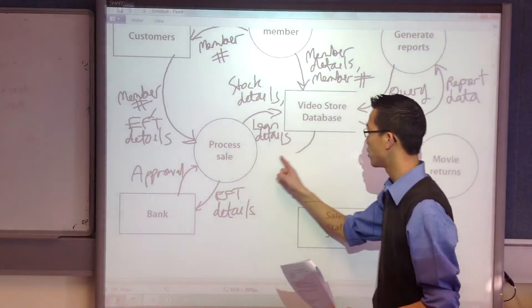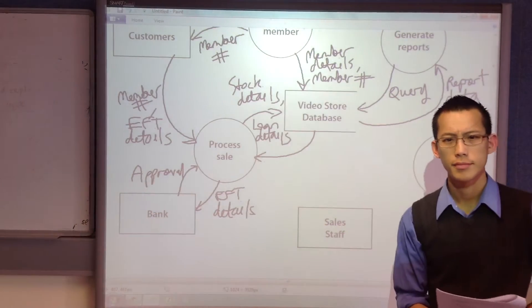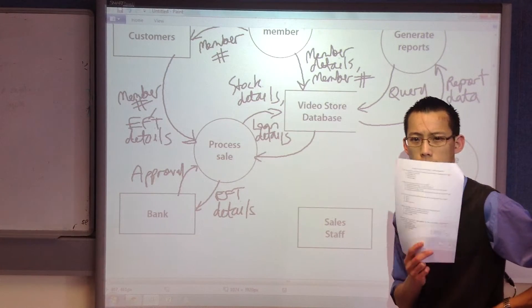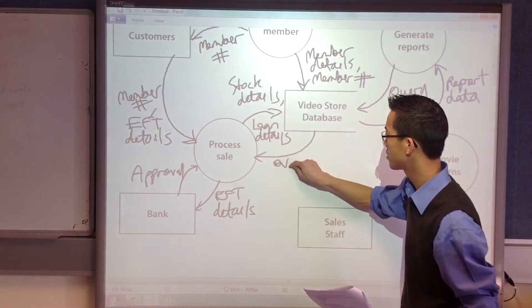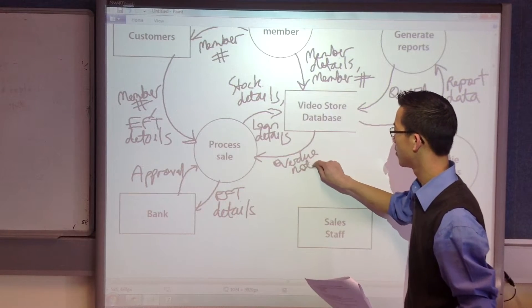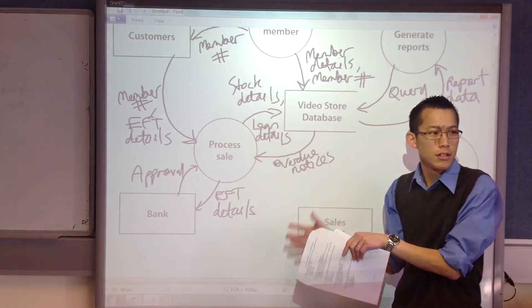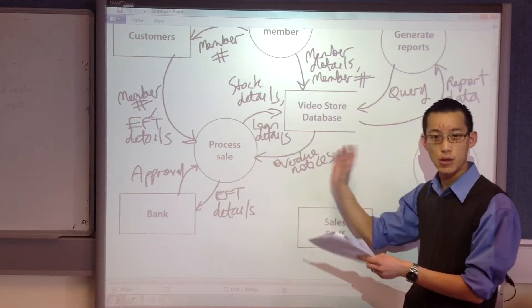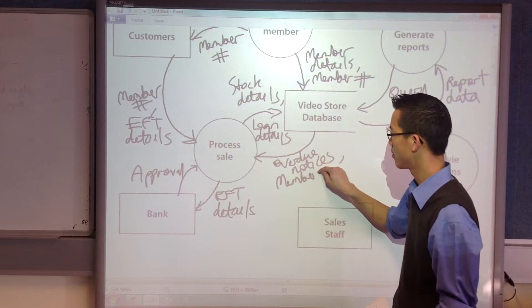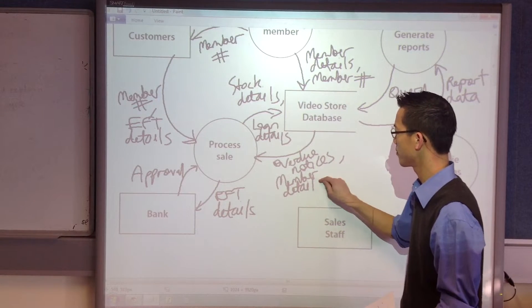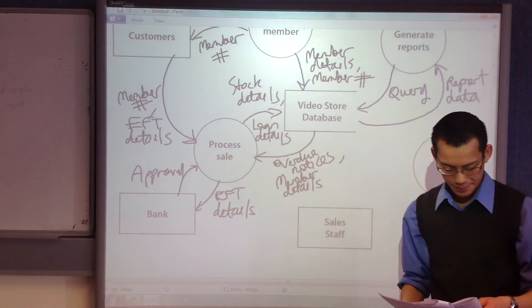Now, probably this video store database is going to pass information back, right? What else might it put back? Back to the same. Yeah, good. So, overdue notices, right? Or maybe it will just pass back information about, not necessarily overdue, but just whatever is still on that person, that member's card, okay? So, more member details. All this happens in one transaction.